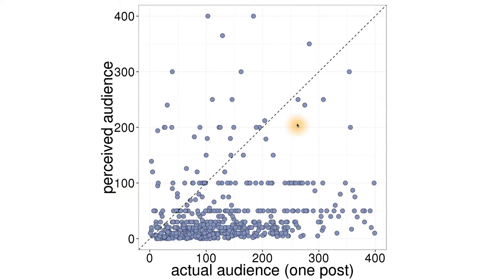You really see that all of the points on the scatter plot form a big cluster at the bottom. So people are guessing very small numbers — 20, 50, something like that — when in reality their audience size is 100 or 200.